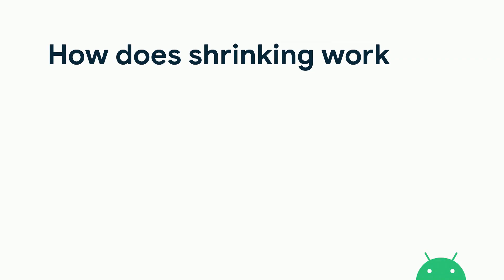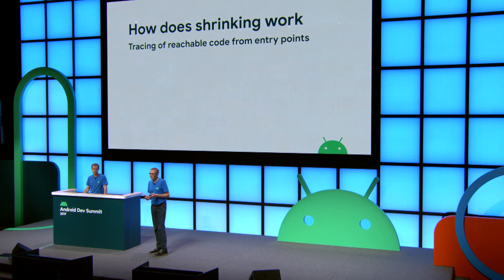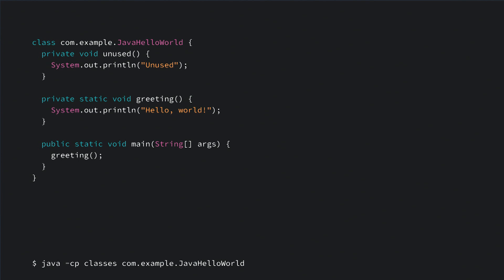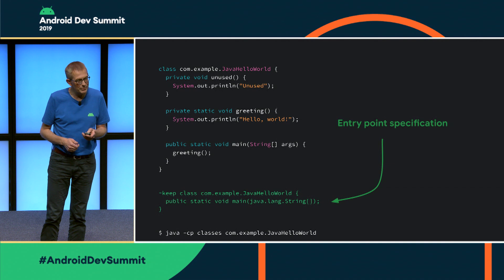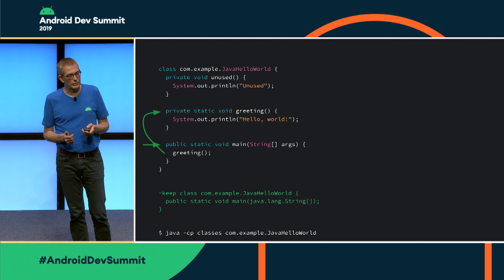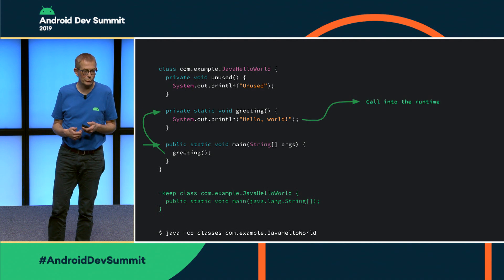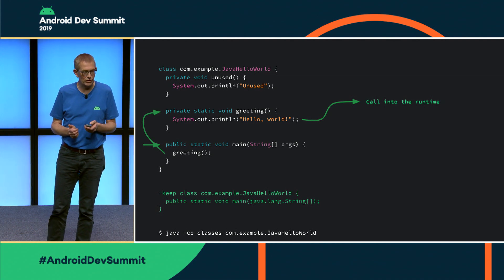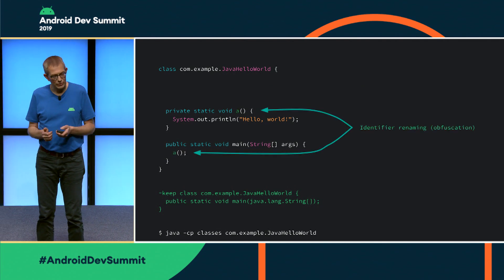Now let me walk through the basic process of how the shrinking algorithm works. The shrinking algorithm traces all reachable code from the well-known entry points of the program. R8 starts with these entry points and walks through all reachable code. To define these entry points, we use what we call keep rules. Take this simple Hello World example in Java — the well-known entry point is the static void main of the application class, defined using a keep rule. When shrinking starts, it traces code at the entry point, finds that greeting is called, traces greeting, which calls into the runtime, where tracing stops. Now the tree shaker can remove the unused code.